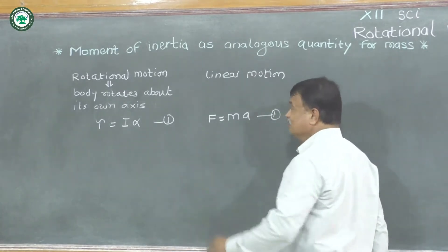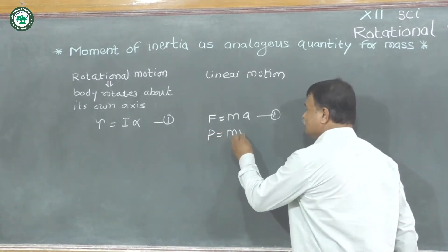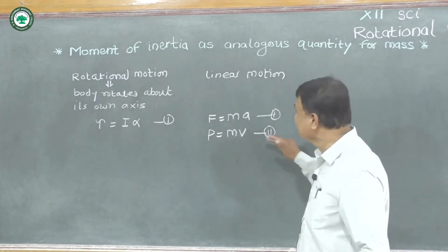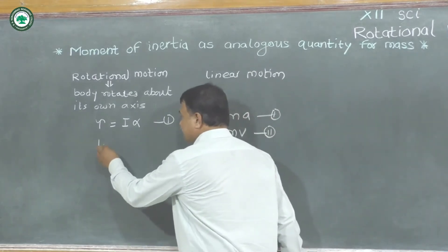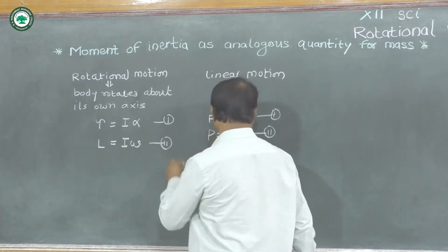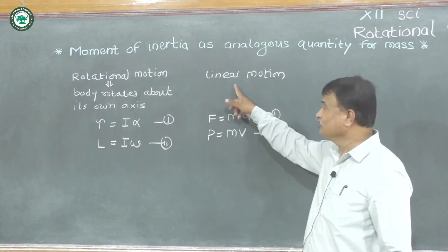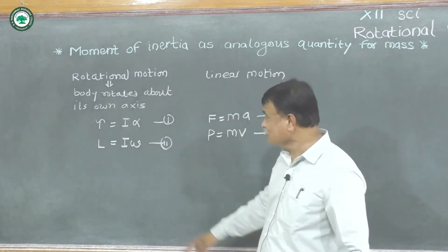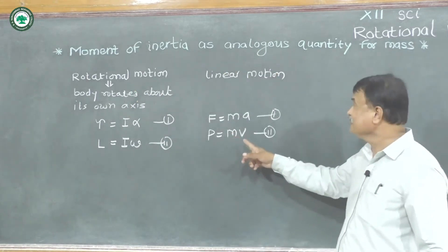Another formula: linear momentum is the product of mass into velocity. In rotational motion there is angular momentum, and this angular momentum is equal to I into omega. So linear momentum in linear motion is analogous to angular momentum in rotational motion — and therefore moment of inertia is again analogous to mass in linear motion.